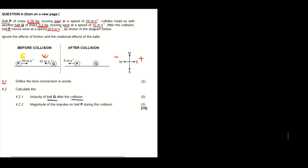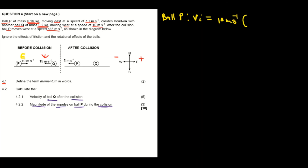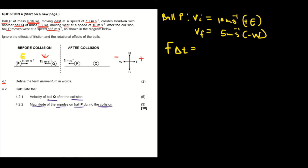Question 4.2.2 asks us to calculate the magnitude of the impulse of ball P during the collision. We need the information for ball P: the initial velocity is positive 10 m/s (east direction) and the final velocity is negative 5 m/s (west direction). The equation for impulse is F × Δt = change in momentum.